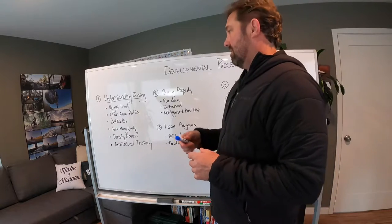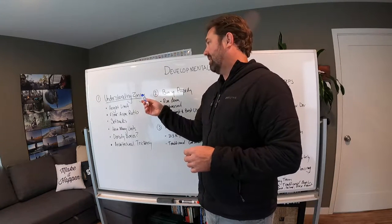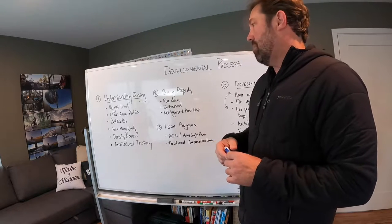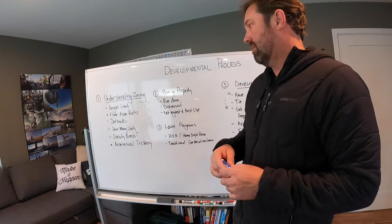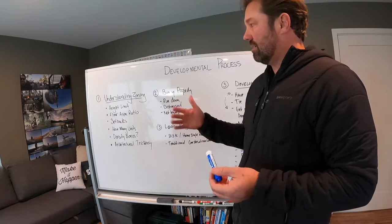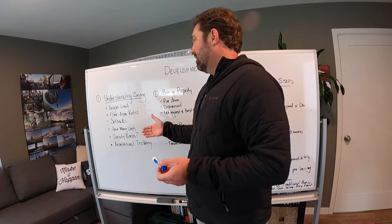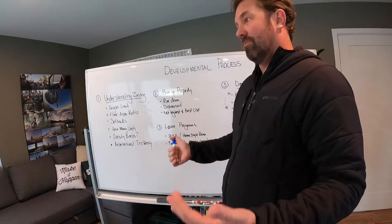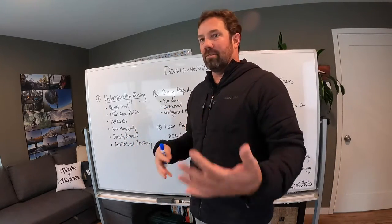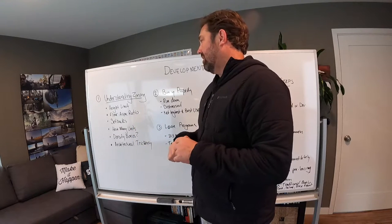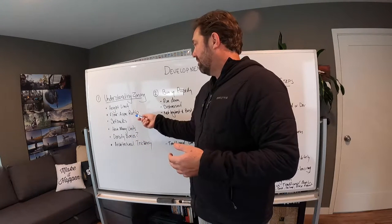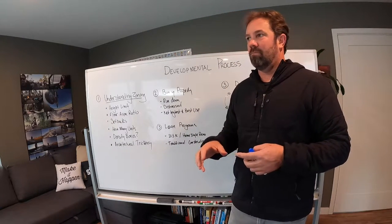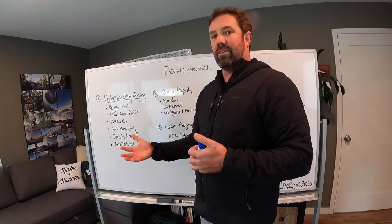First and foremost, you absolutely have to understand the zoning in your local town or community. Basically what this is constructed of are these six line items. The height limit — how high can you build the building? If you can build higher, that allows you opportunities to add and augment the structure so you can get more floor area. The floor area ratio pertains to how many square feet of building you can build compared to how many square feet of lot you have.